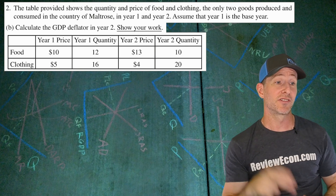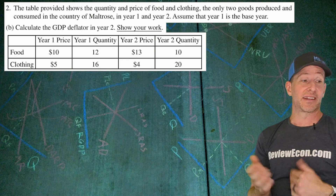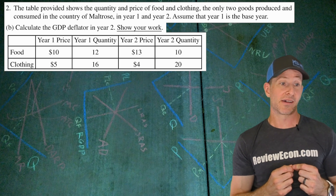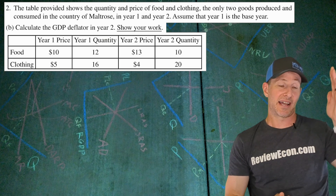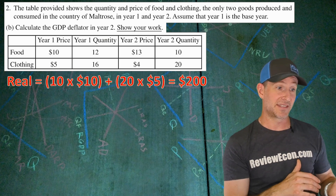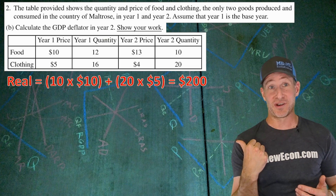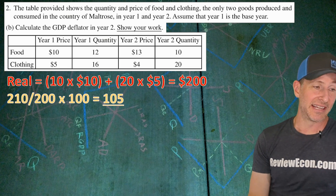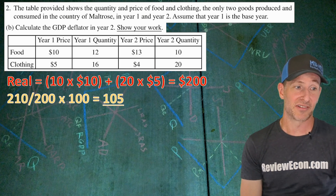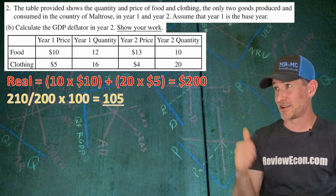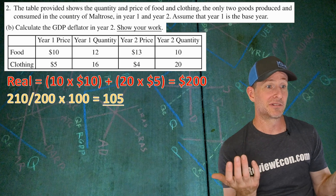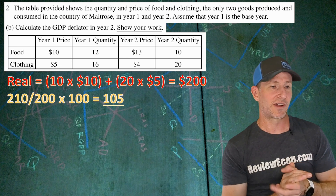Now we calculate the GDP deflator for year two. We already have nominal GDP of $210 using current year quantities times current year prices. For real GDP, we use current year quantities times base year prices: 10 times $10 plus 20 times $5 equals $200. The GDP deflator is nominal divided by real times 100: 210 divided by 200 times 100 equals 105. You'll need to show the real GDP calculation using the correct base year prices to prove you used the right numbers.